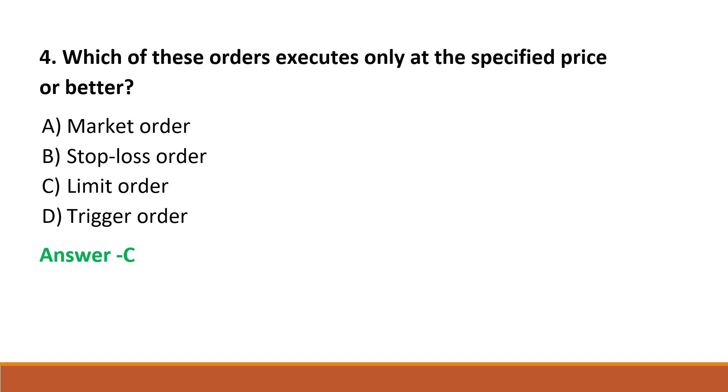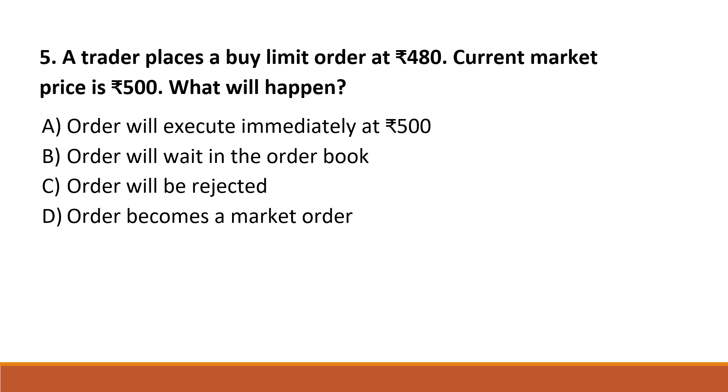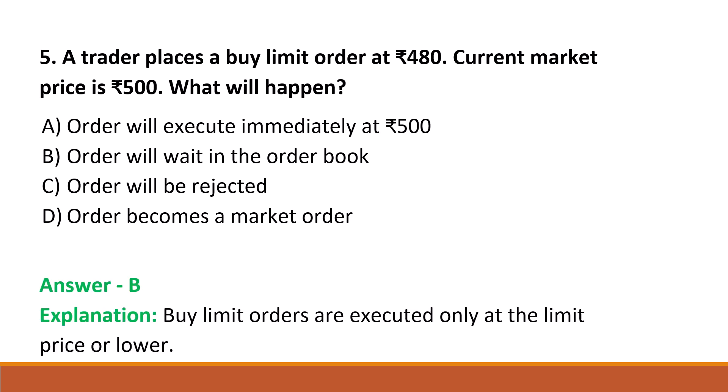Next question: a trader places a buy limit order at 480, current market price is 500. What will happen? Option A: order will execute immediately at 500. Option B: order will wait in the order book. Option C: order will be rejected. Option D: order will become a market order. The correct answer is Option B, order will wait in the order book. Buy limit orders are executed only at the limit price or lower.